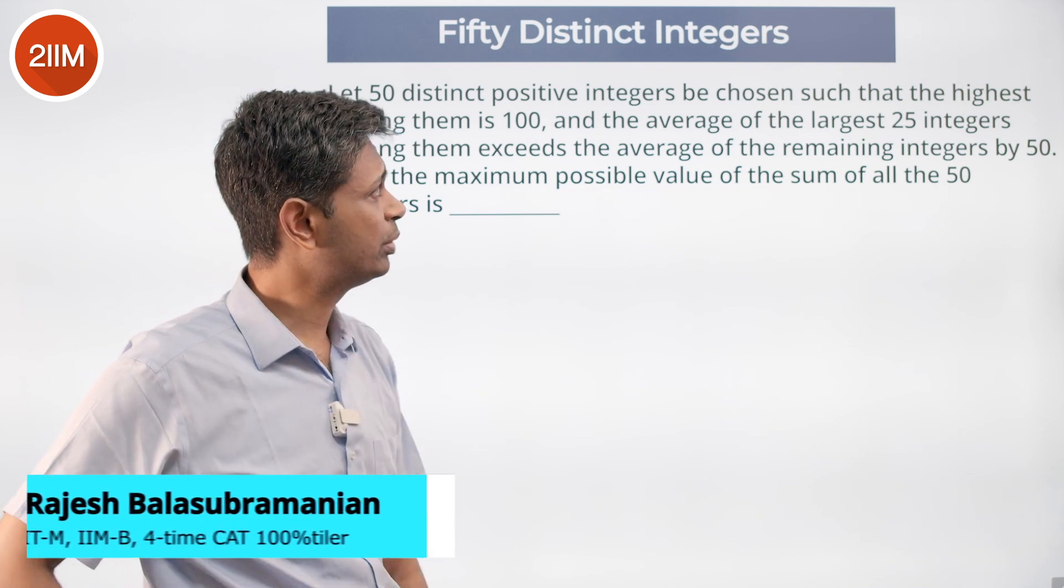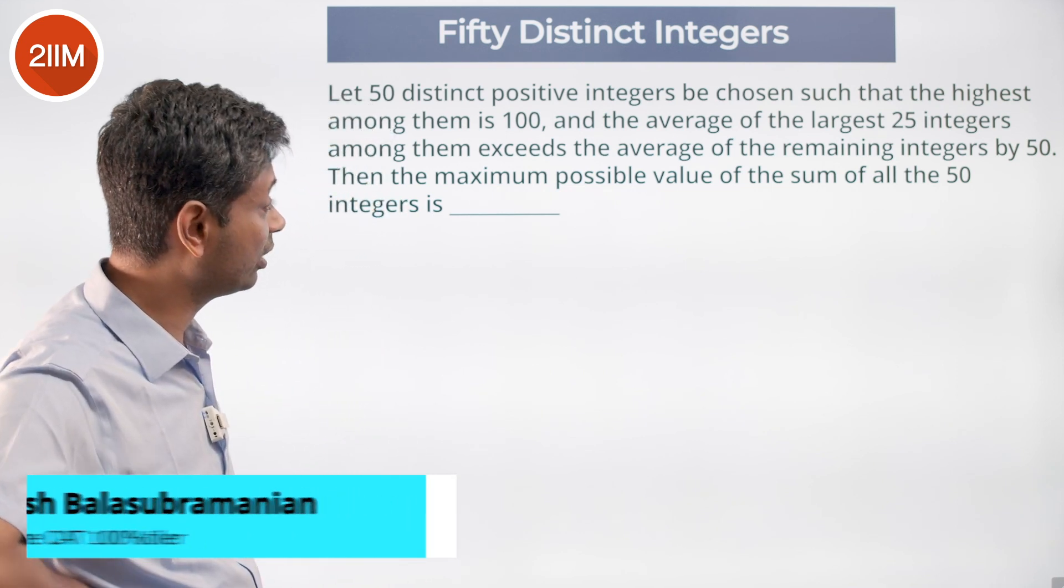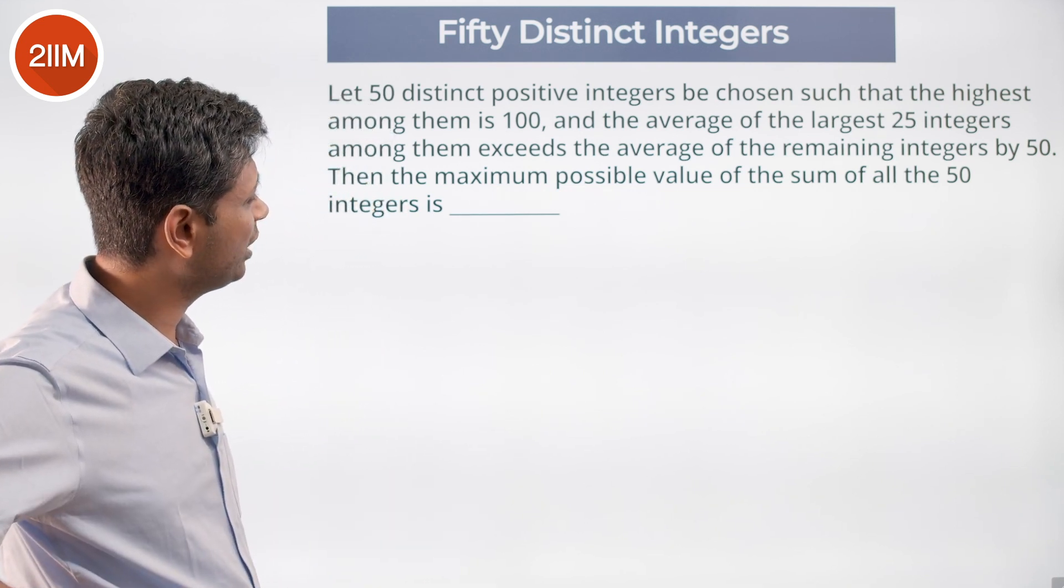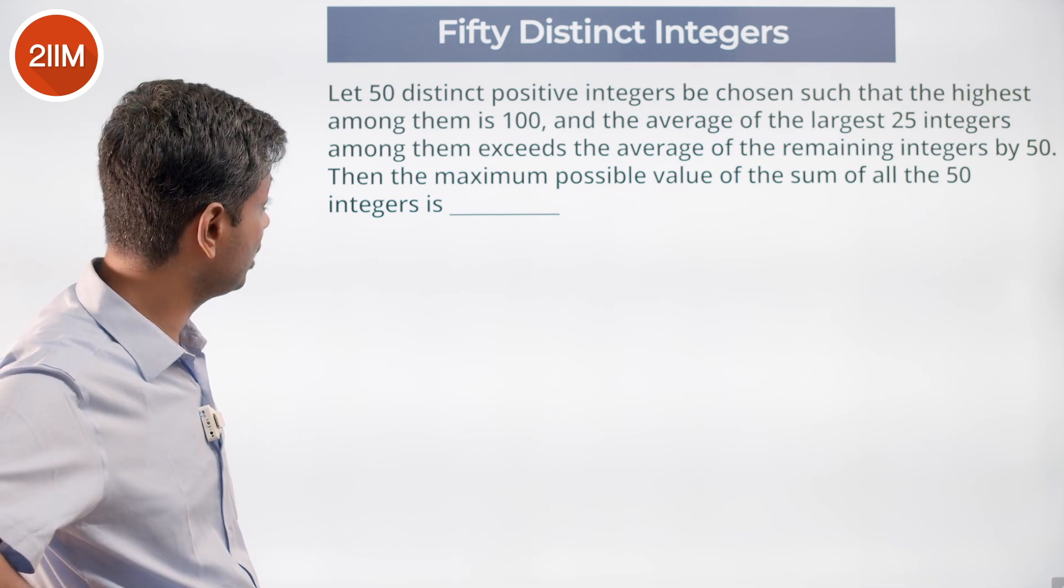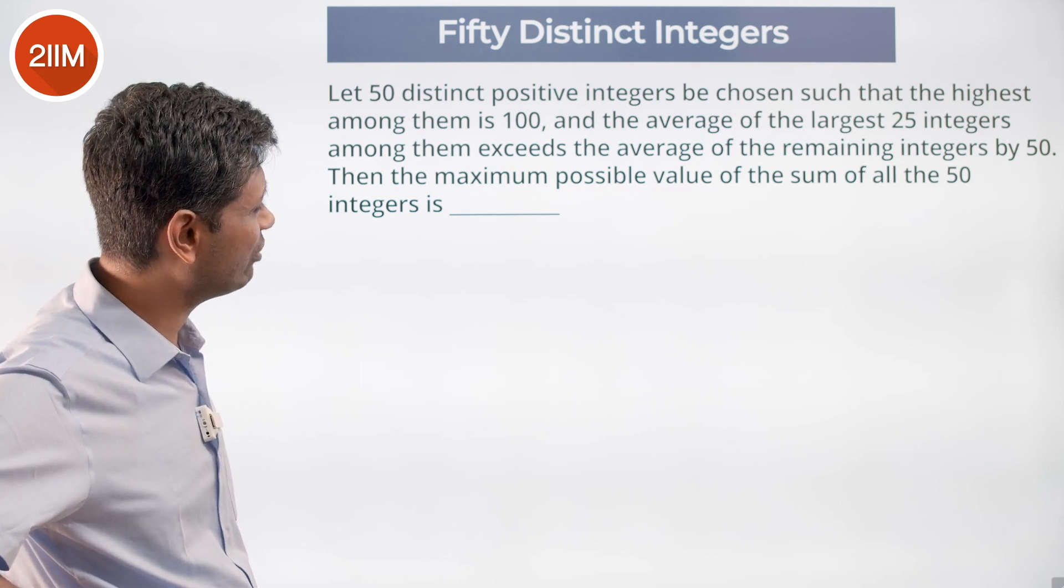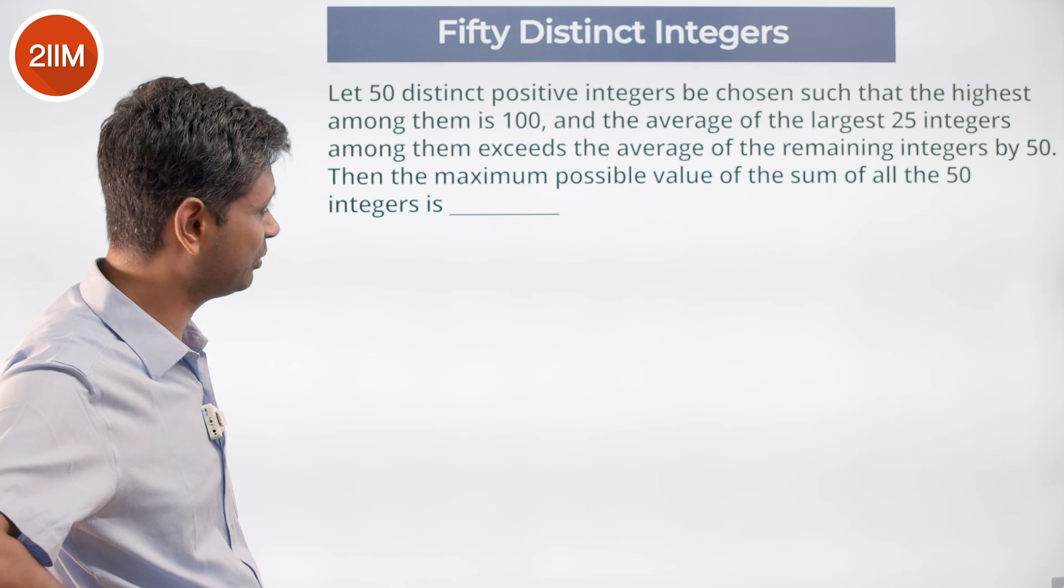Let 50 distinct positive integers be sorted such that the highest among them is 100. The average of the largest 25 integers among them exceeds the average of the remaining integers by 50.